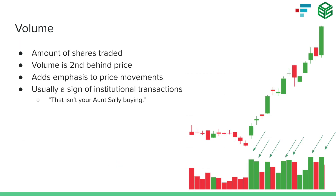Now that we've talked about price action, we can talk about the second most important indicator, which is volume — the number of shares traded during that time period. If you're brand new to the stock market, think of individual stocks as pizzas. By agreeing to go public, you split part of your company into a million different pieces that can be bought or sold on the stock exchanges, allowing you to raise money to invest into growing your business. Volume is the amount of those pieces or shares that were traded for that stock on that day, week, or minute.